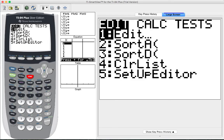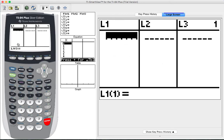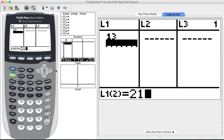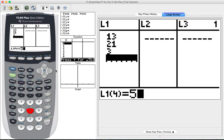Press STAT, ENTER on Edit, and in your empty list, I'm going to be using L1, you're going to put your data values. The data values I'll use are 13, 21, 3, 5, and 8.